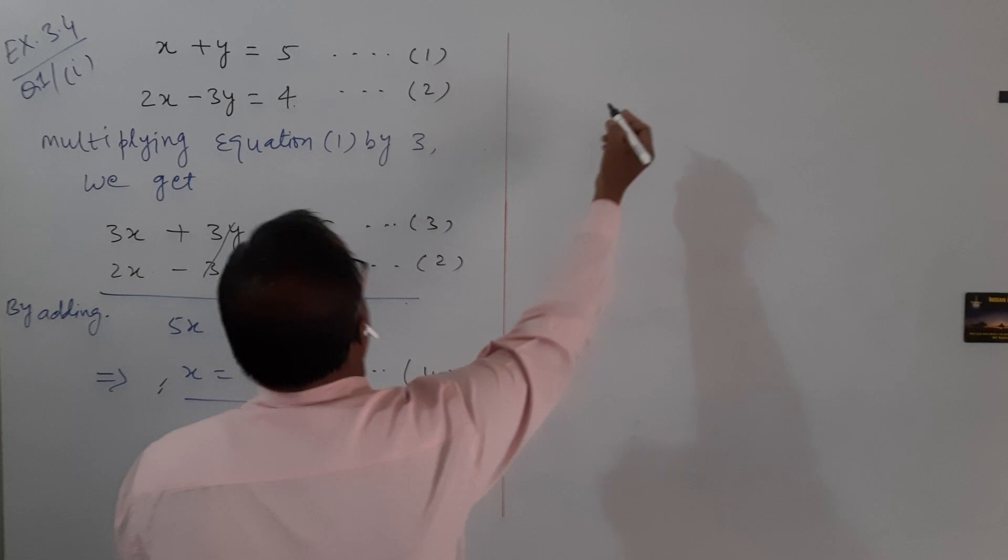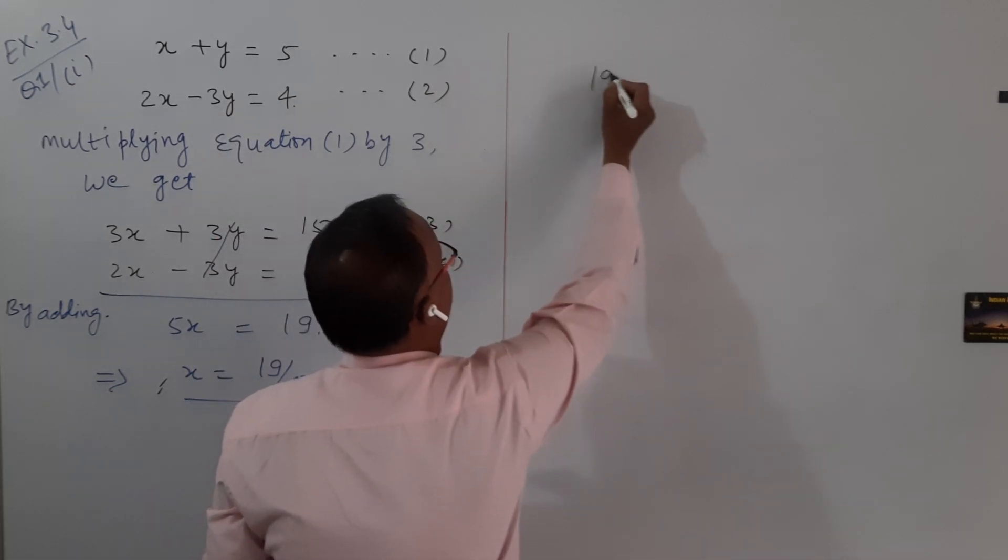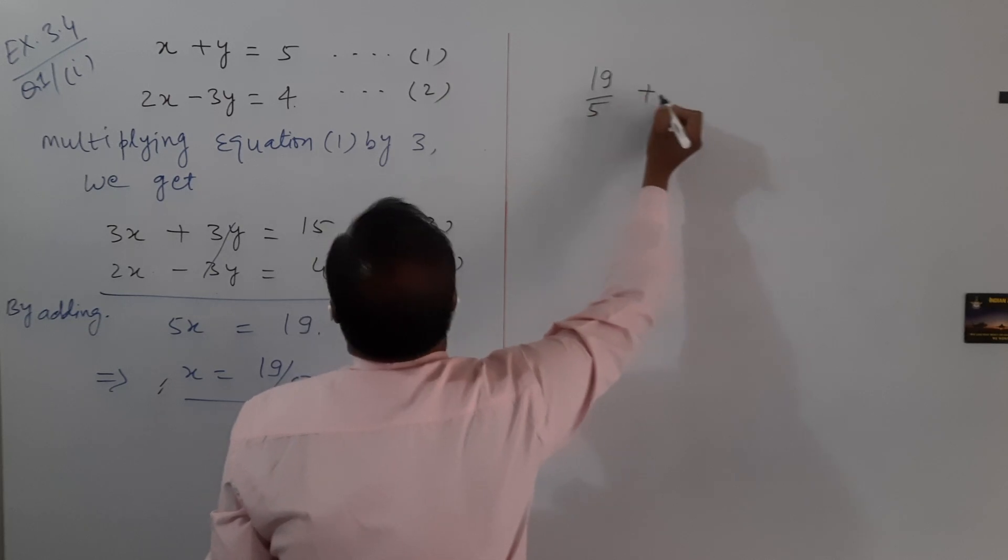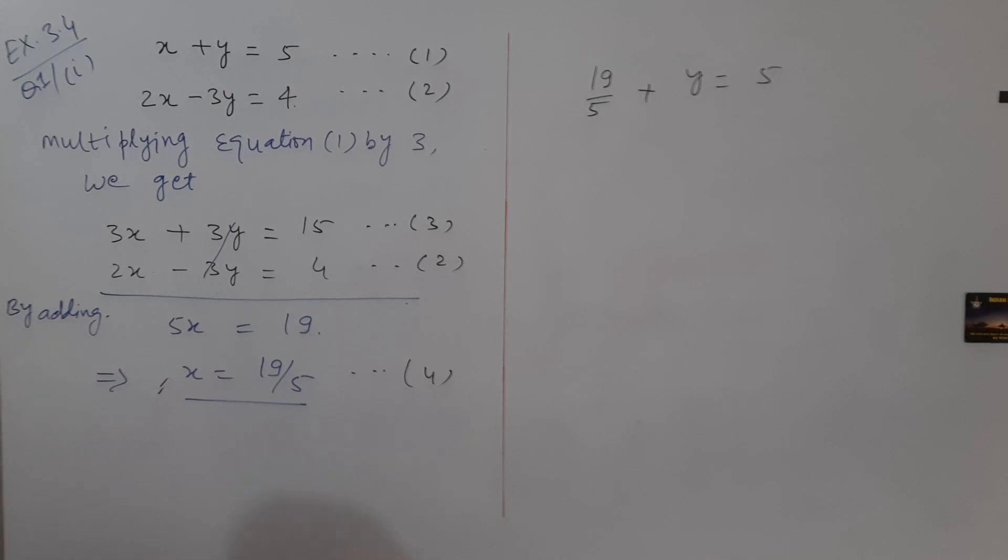We get, in place of x, we write 19 by 5. So 19 by 5 plus y equals 5.